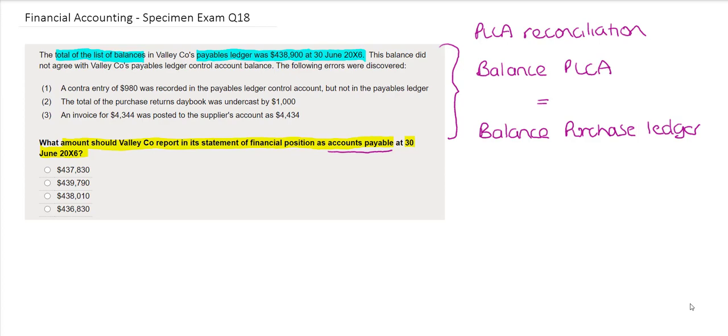We have not been given our purchase ledger control account balance and so therefore we need to work with what's going on in the payables ledger in order to work out our balance. So our starting point will be the balance per the payables list which equals $438,900.